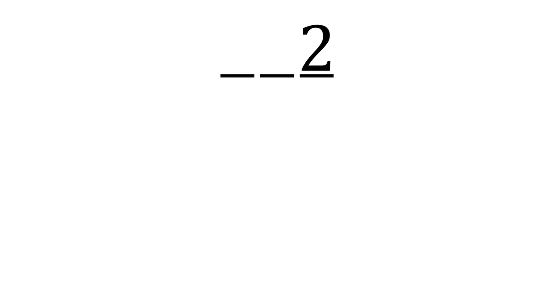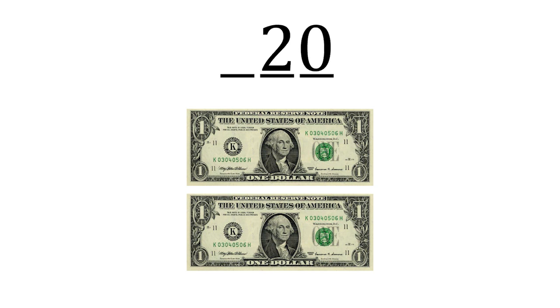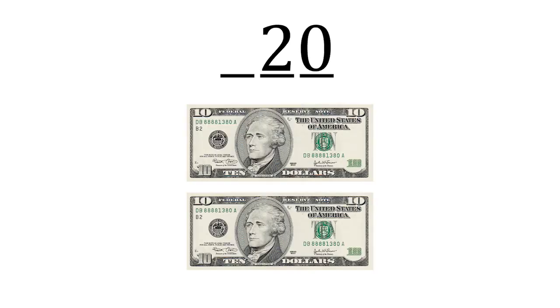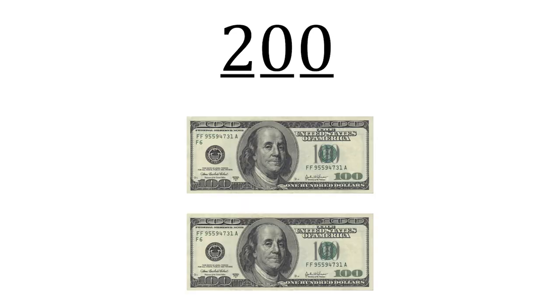Think of money. If the 2 is written like this, it is like having two $1 bills. If the 2 is written like this, it is like having two $10 bills. If the 2 is written like this, it is like having two $100 bills.